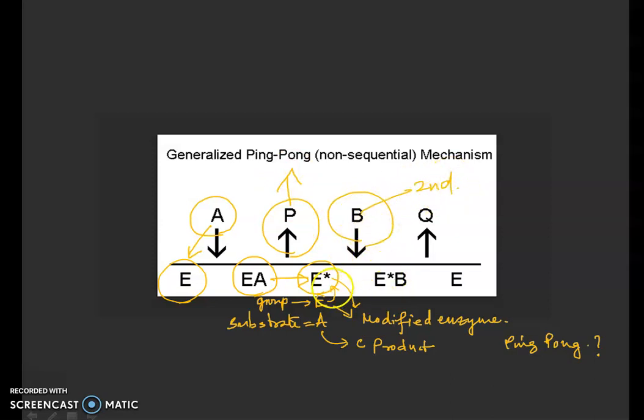When it will bind, now only this E star state is able to interact with the B. This is how E star B will be formed, an intermediate transient molecule, and finally Q will be produced. Is it a ping-pong? Yes.